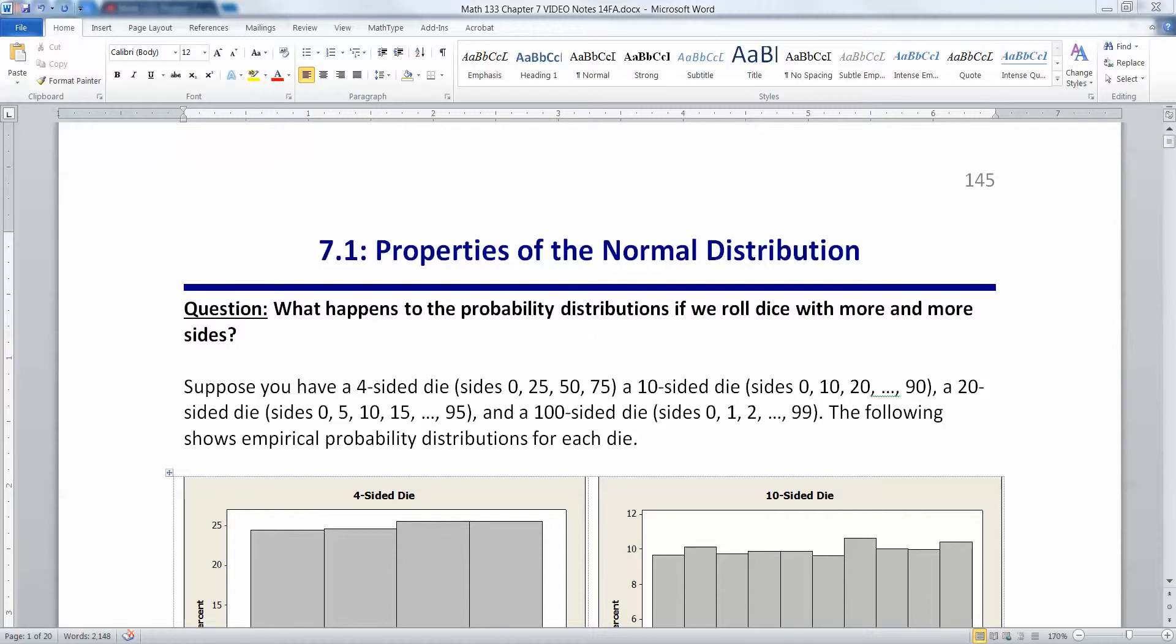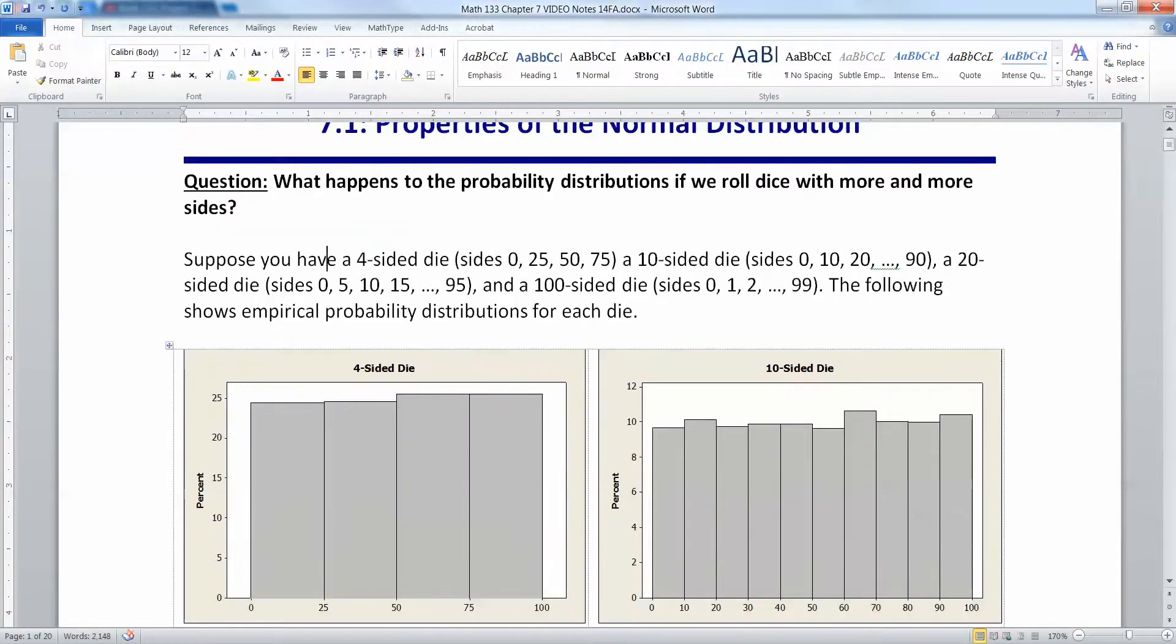Suppose we are going to roll dice with more and more sides. You have a four-sided die, with sides 0, 25, 50, and 75. Then you have a 10-sided die, a 20-sided die, and a 100-sided die.